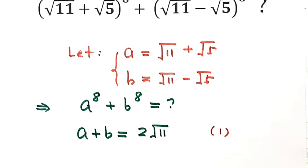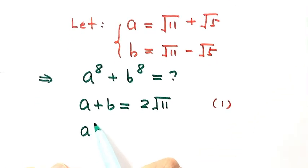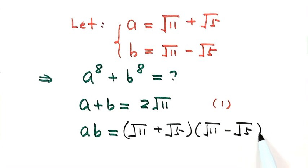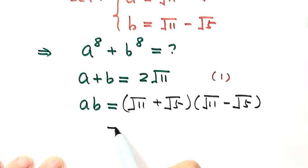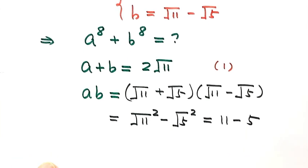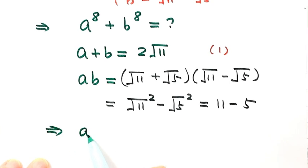Now let's see what A times B is. A times B equals (√11 + √5)(√11 − √5), which equals (√11)² minus (√5)², which is 11 minus 5. So A times B equals 6. We'll label this Result 2.